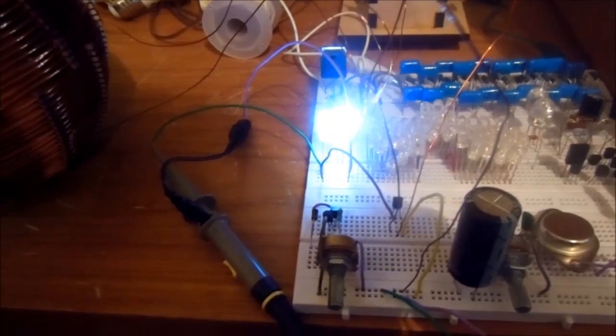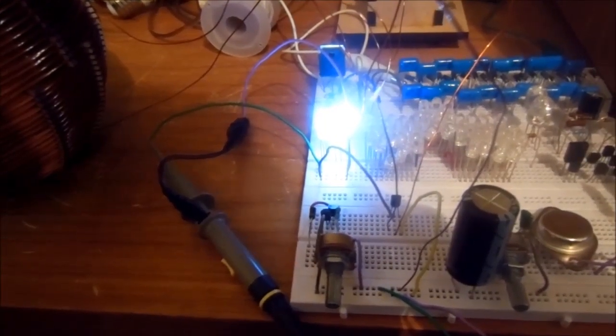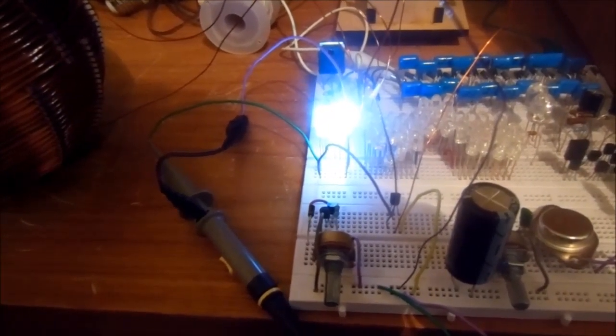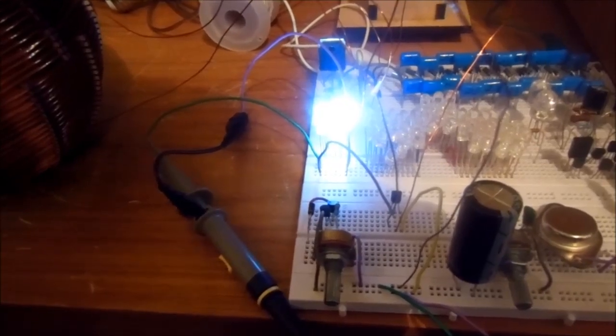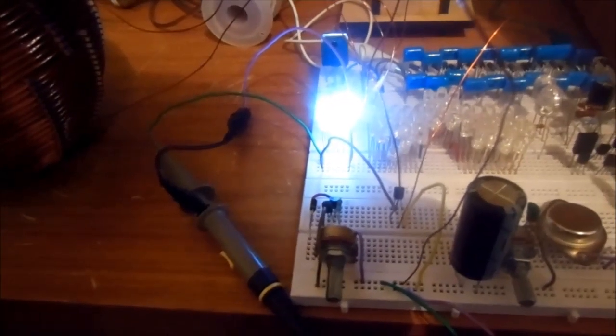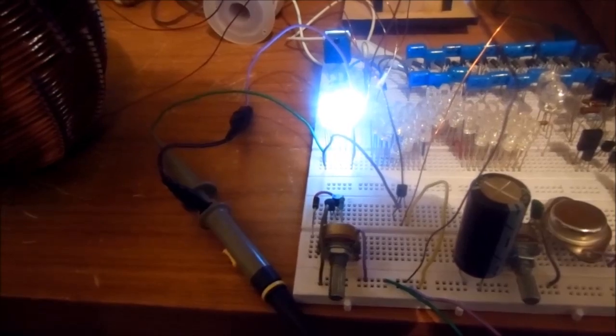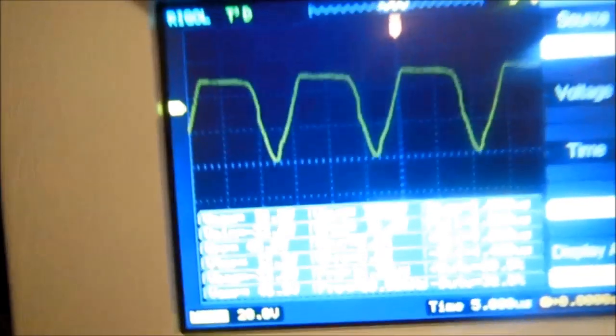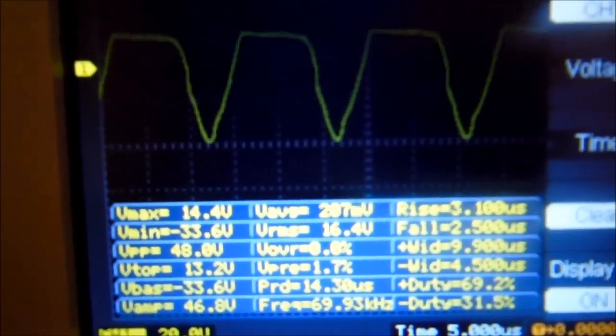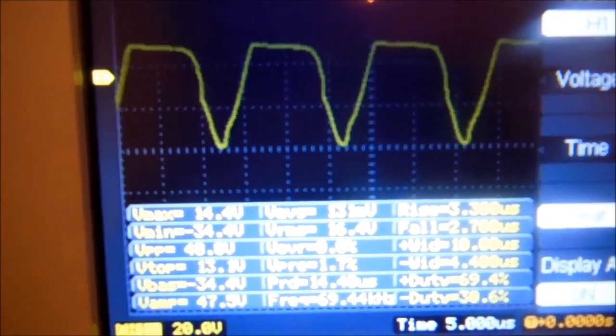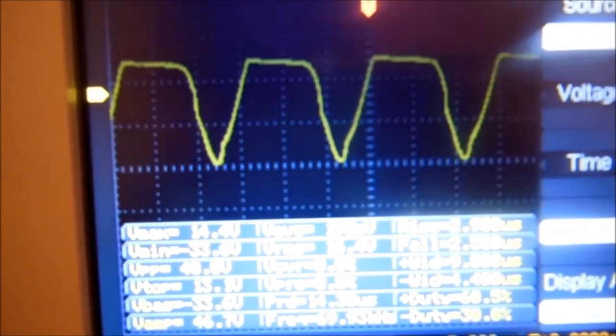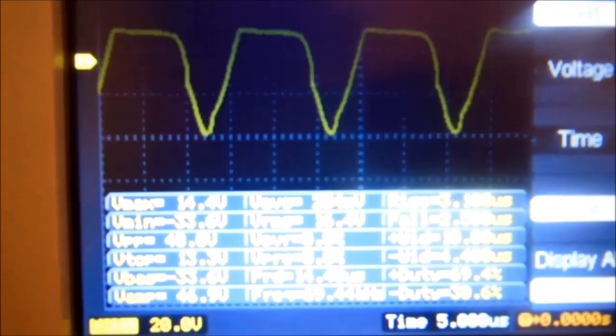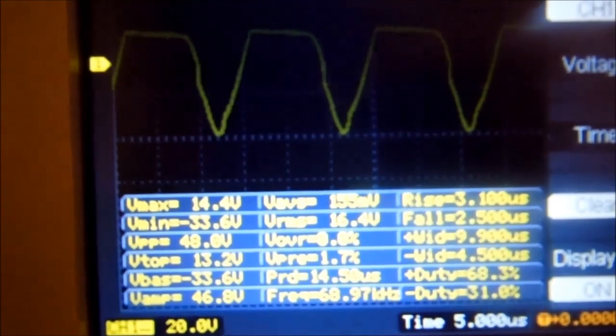So I decided to connect the scope to check the waveform, and I noticed the LEDs seem to be more brighter than before, and so the scope is actually influencing how the circuit performs. The waveform seems to be similar to the waveform that LaserSaber was getting in his experiment.